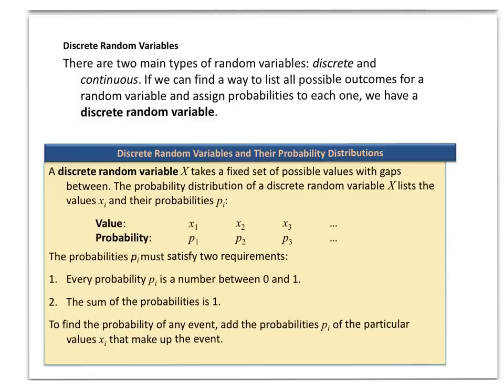A continuous random variable is something that I cannot count. For example, if I asked you to list all the numbers between zero and one, that's all the decimal numbers — any number between zero and one. You can't list all those numbers; there are too many and it goes on infinitely. That would be an example of a continuous random variable. A discrete random variable is a fixed set of possible values with gaps in between — you know exactly how many different outcomes there are.